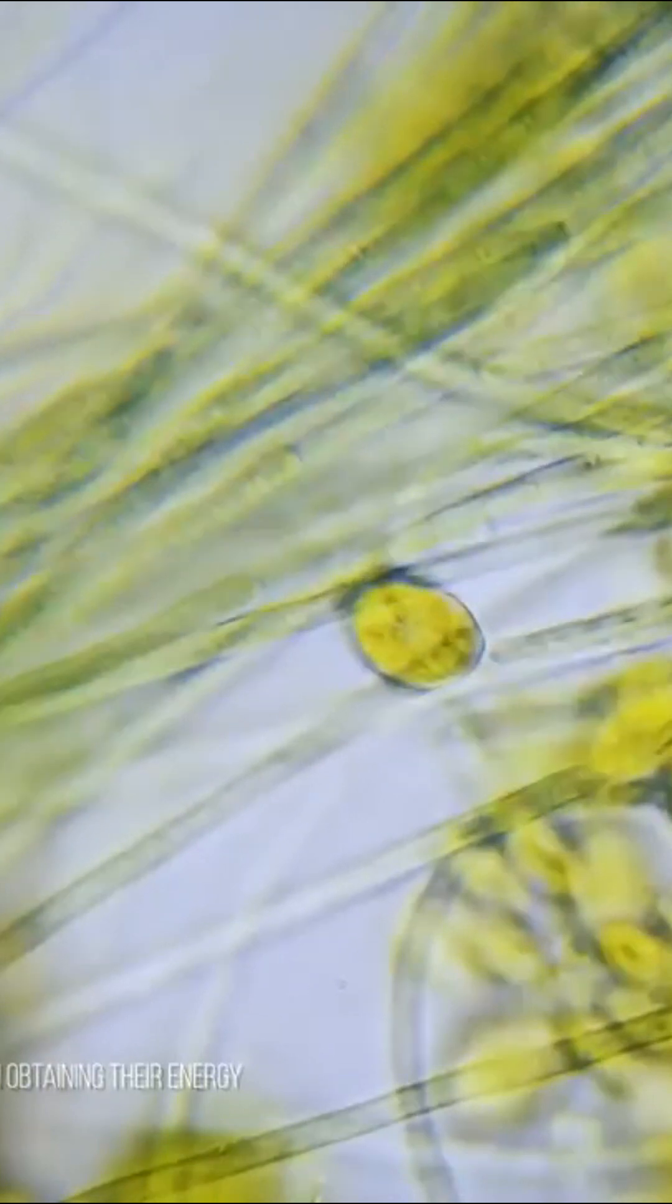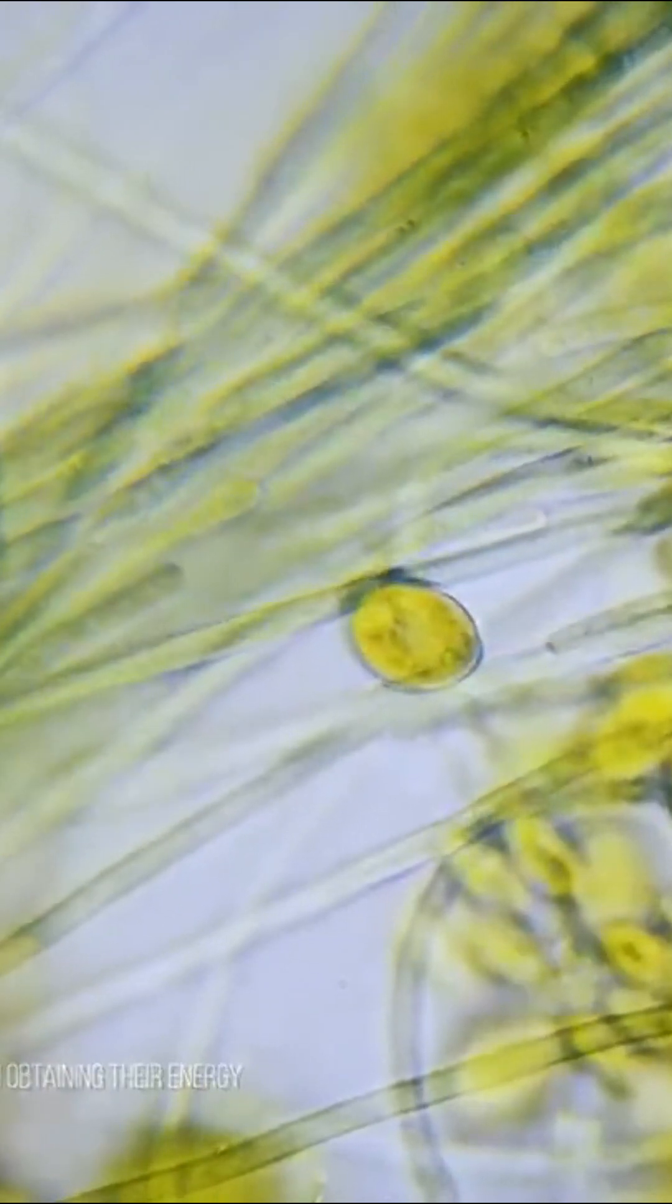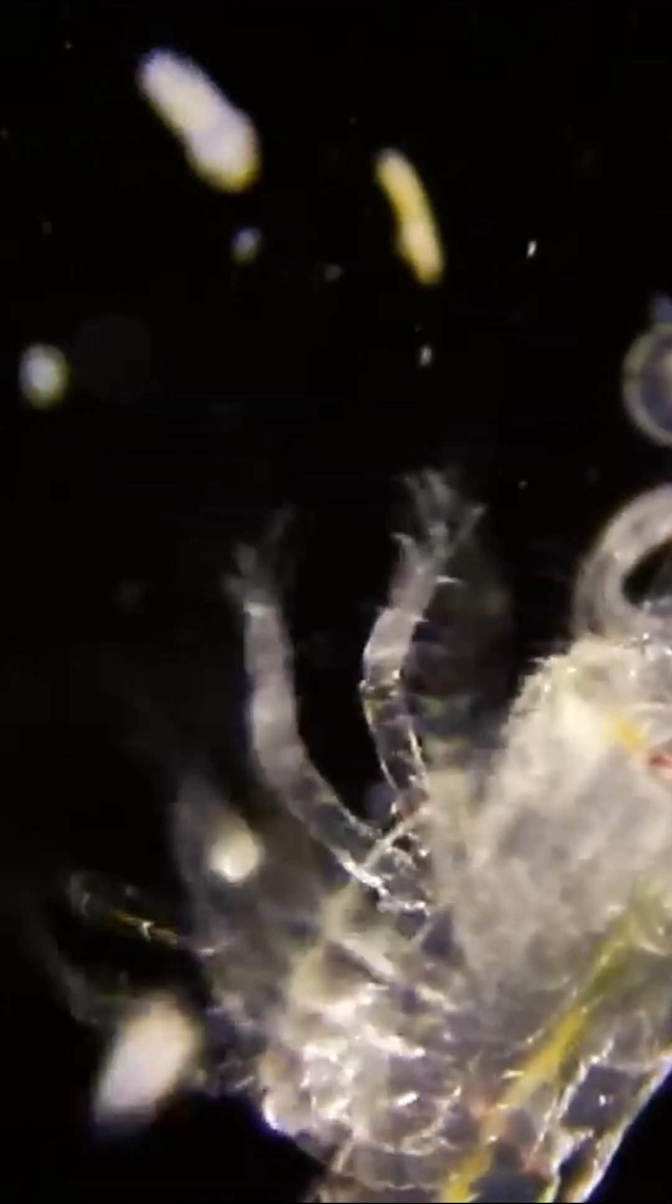For the record, phytoplankton are all unicellular organisms present in the surface waters of the ocean and using photosynthesis as a source of energy. Zooplankton are animal plankton that feed directly or indirectly on phytoplankton.